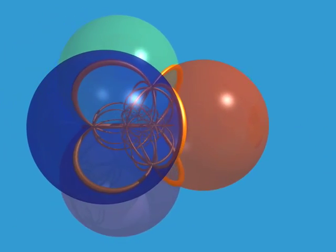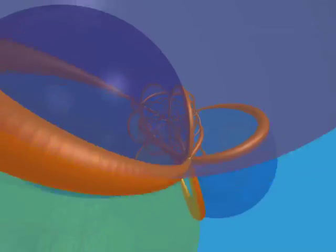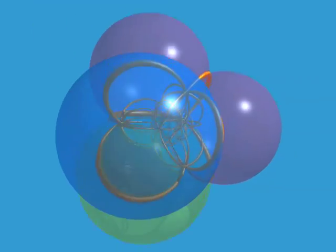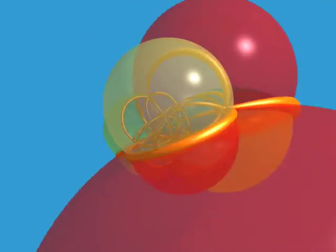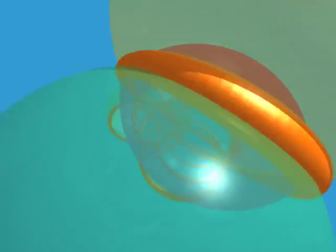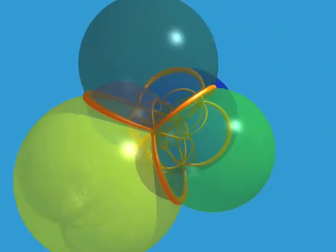Let's finish with the 600 cell, with its 600 three-dimensional tetrahedral faces, its 1,200 triangular faces, its 720 edges, and its 120 vertices.